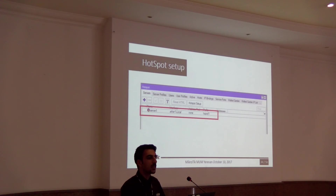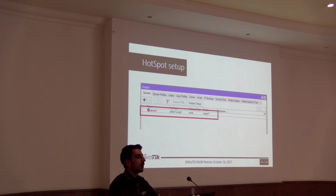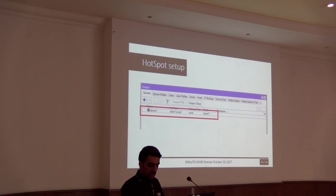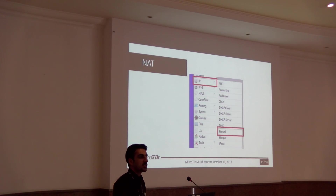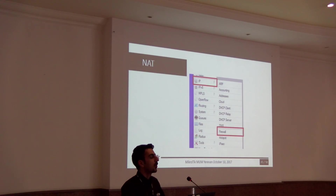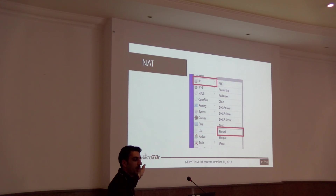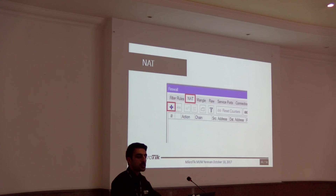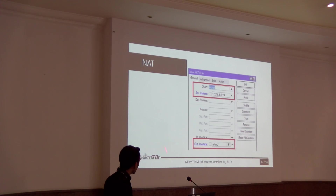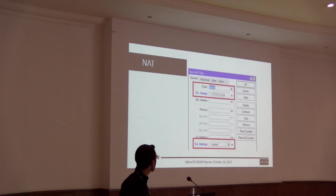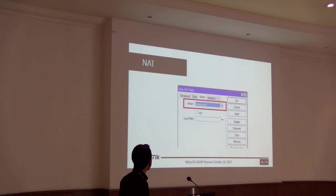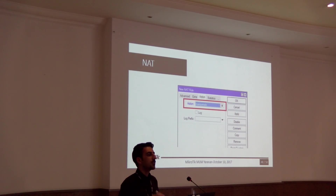Clients cannot access the internet yet because we don't have enough public IPs, so we need to add a source NAT. Go to the IP menu and click on Firewall, then go to the NAT tab and click Add. You can see the configuration on screen. Go to the Action tab, set the Action parameter to Masquerade, and click OK. Now all traffic from clients will be NATed through the Hotspot router.